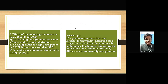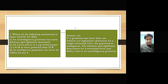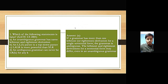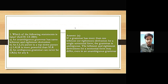Gate question 3 (Gate 2001): Which of the following statements is false? A) An unambiguous grammar has the same leftmost and rightmost derivation. B) An LL(1) parser is a top-down parser. C) LR is more powerful than SLR. D) An ambiguous grammar can never be LR for any k. The correct answer is A.